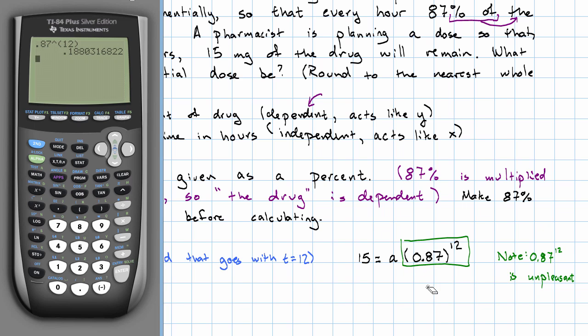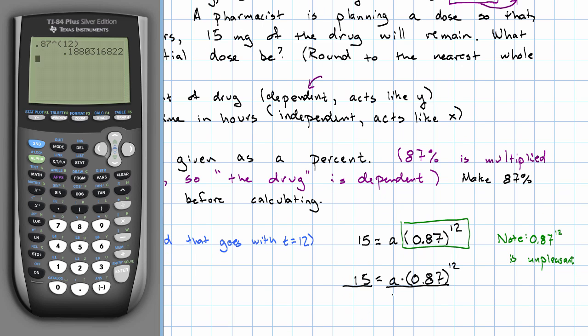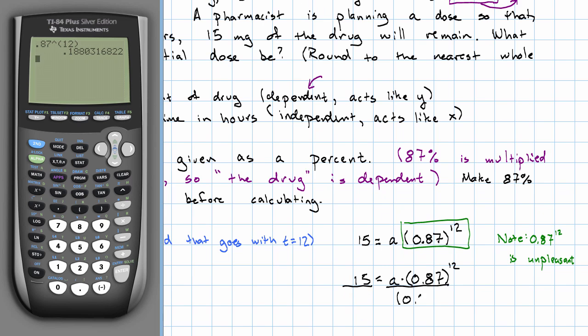So, instead of actually working that out, I'm just going to work the algebra, leaving it written this way. So, I'm going to divide both sides by that number. And then, I'm just going to put that into the calculator.